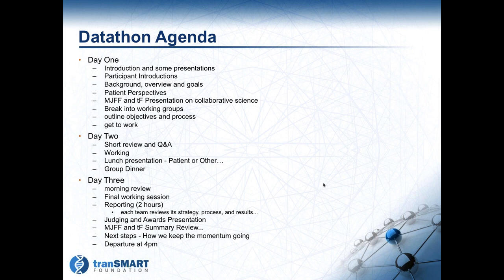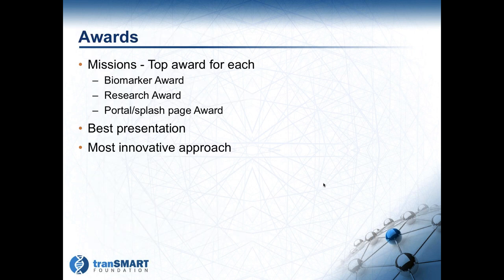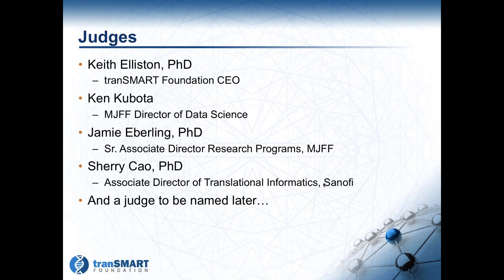So those are the resources and capabilities — what's the agenda? On day one, we'll start out, get people together, have a quick introduction where everybody introduces themselves, give a background overview and goals for the datathon. We're looking to bring a couple of key patient perspectives to help drive the day. There'll be presentations from both the Michael J. Fox Foundation and TransMart Foundation on collaborative science. People will then break into working groups, outline their own goals and objectives, and we'll have people around to help answer questions. The idea is to get to work as quickly as possible. Day two starts with a short review and Q&A, then everybody gets back into their groups. We'll have a lunch presenter, and at the end of day two a group dinner where everyone can come together for conversation — a relaxed means of collaborating.